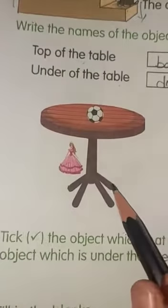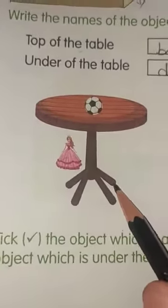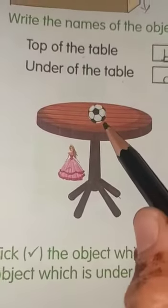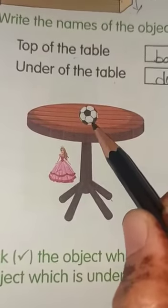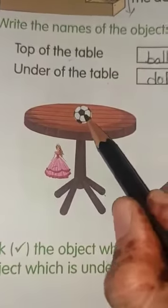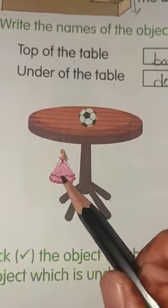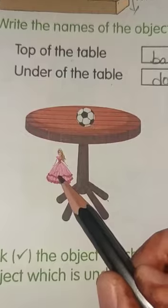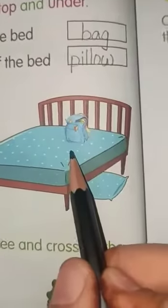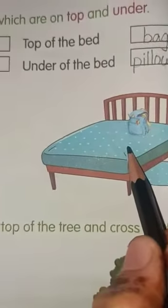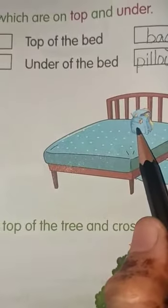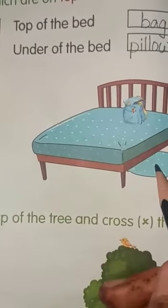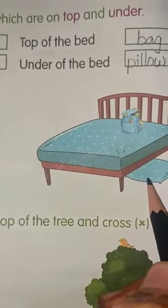Here also you can observe: at the top of the table there is a ball, and under the table there is a doll. Similarly, on top of the bed there is a bag, and under the bed there is a pillow.